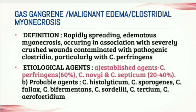Gas gangrene is also known as malignant edema or Clostridial myonecrosis. By definition, it is a rapidly spreading edematous myonecrosis occurring in association with severely crushed wounds contaminated with pathogenic Clostridia, particularly Clostridium perfringens. You can see edema and myonecrosis — damage of muscle tissue — are the key features, and this condition is caused by Clostridium perfringens.